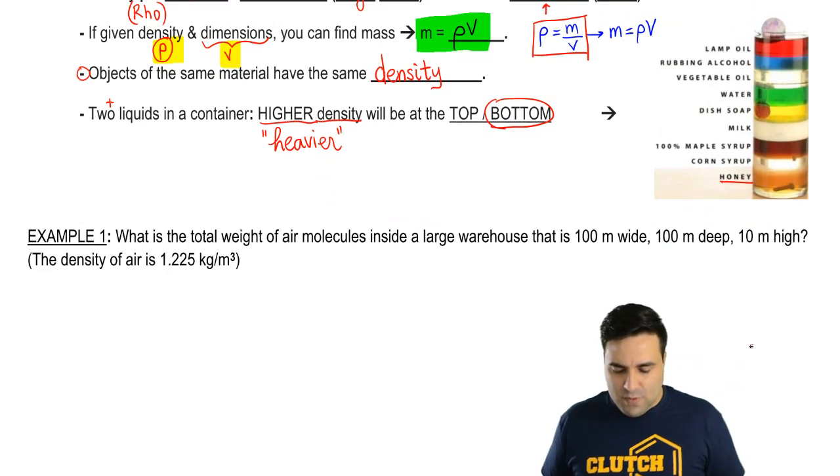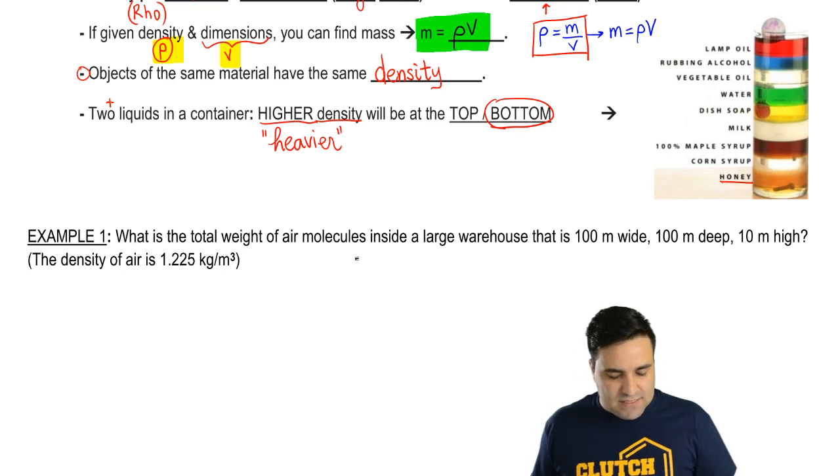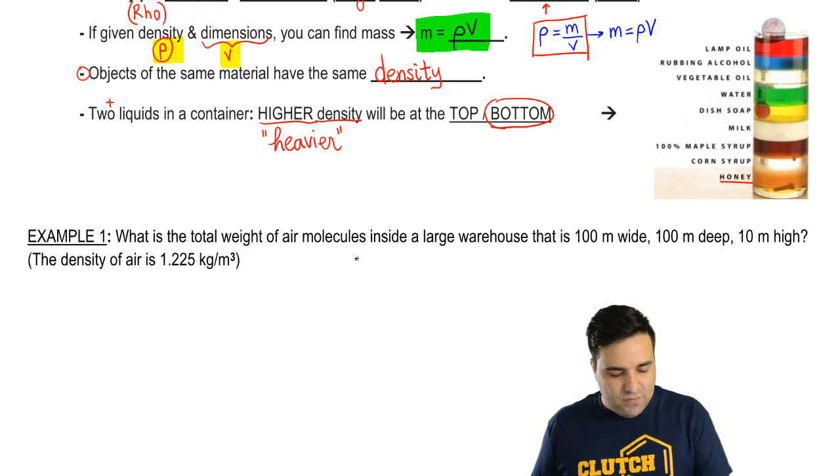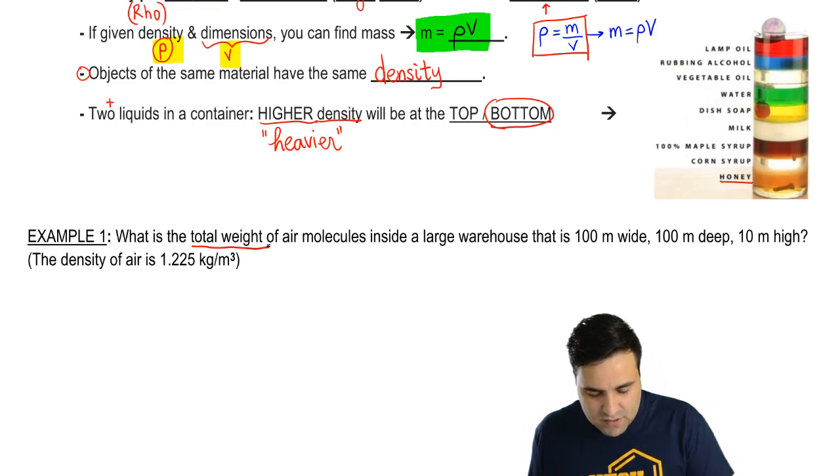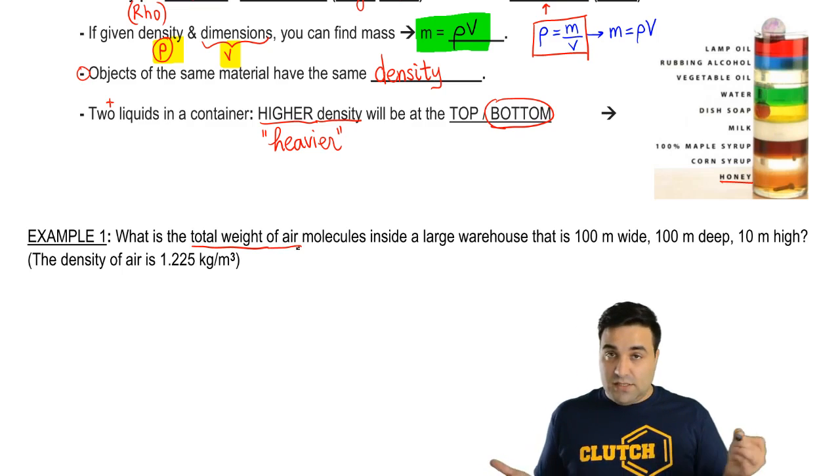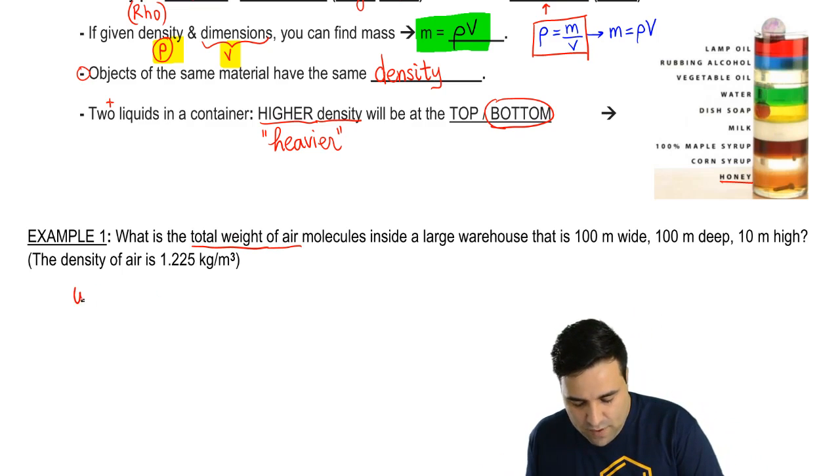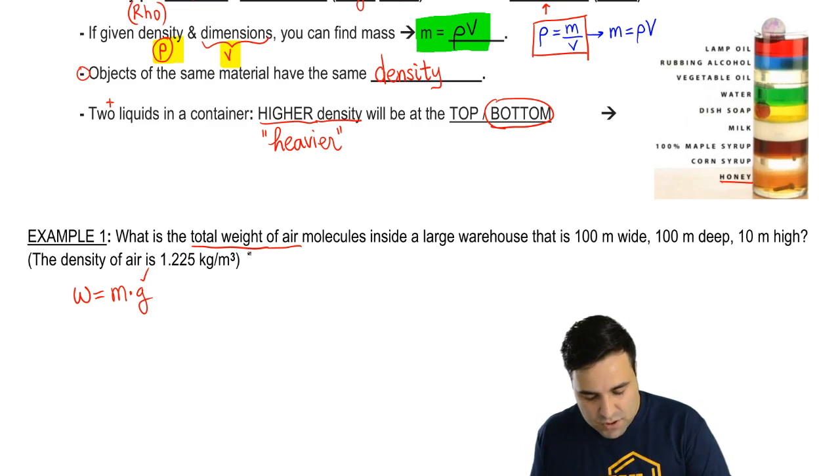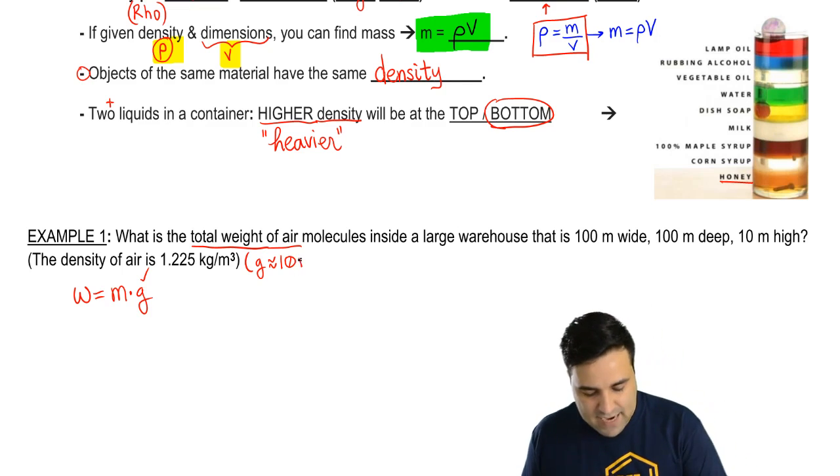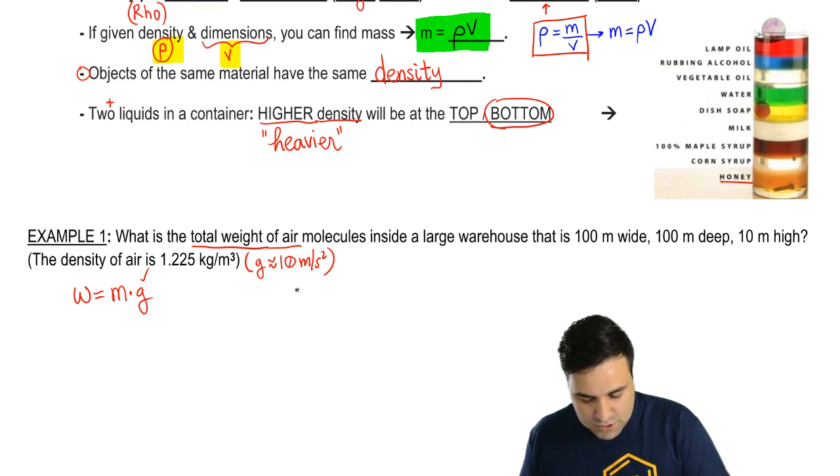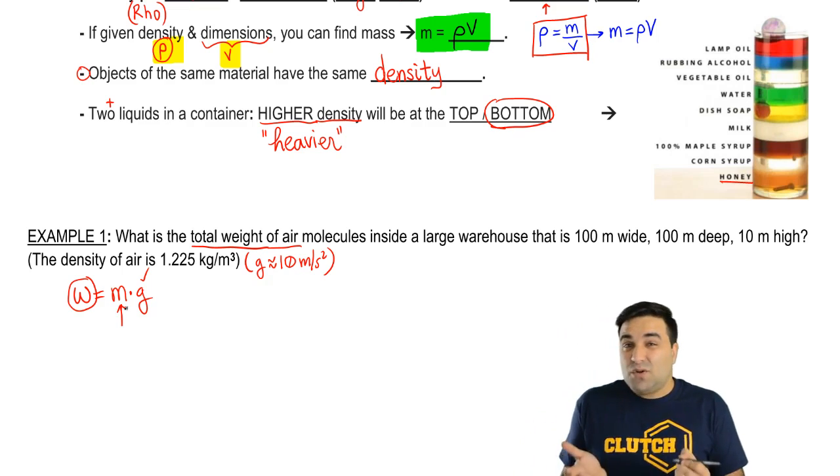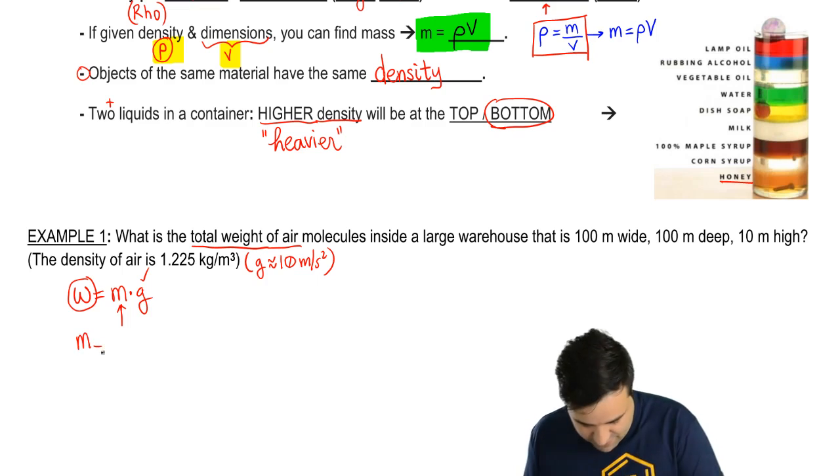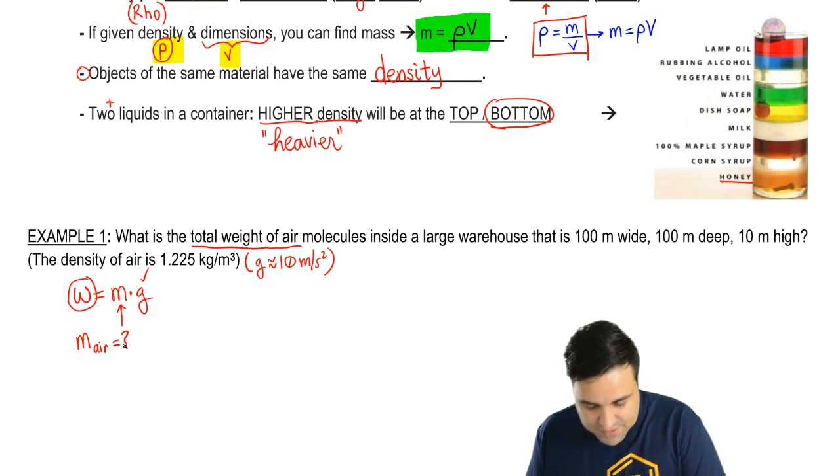So let's do a quick example here. What is the total weight of air molecules inside a large warehouse? And I give you the dimensions here. So I want the total weight of air. So air does have a weight. And so first let's start with weight. Weight, remember, is just mg, mass times gravity. And I know gravity. I'm going to use here, just for the sake of keeping it simple, I'm going to say gravity is approximately 10 meters per second squared. So I'm going to use 10. So if it's asking me for weight and I know gravity, all I really need is mass. So this question is really about finding the mass of air in this space.